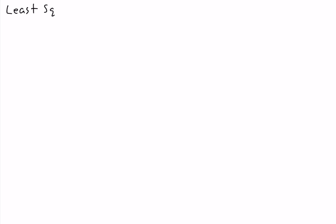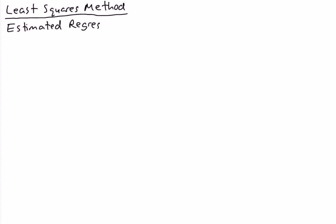The least squares method is a procedure for finding the estimated regression equation. The estimated regression equation is y-hat equals b-naught plus b1 times x.